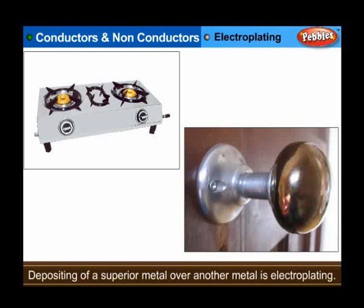How is such plating carried out? The process of depositing a superior metal like gold, nickel, or chromium over a metal like copper, iron, etc. by the use of electricity is called electroplating.